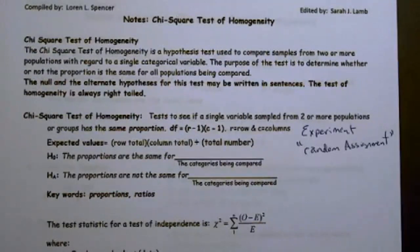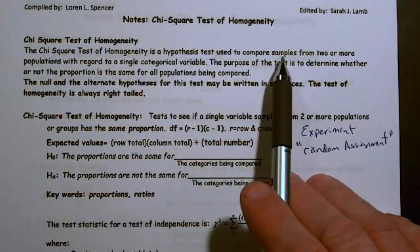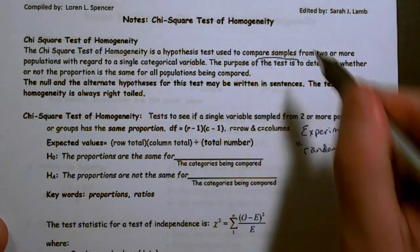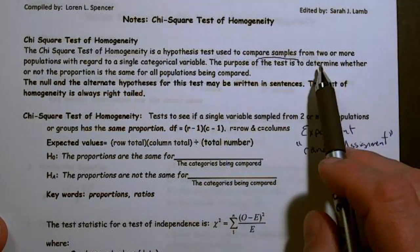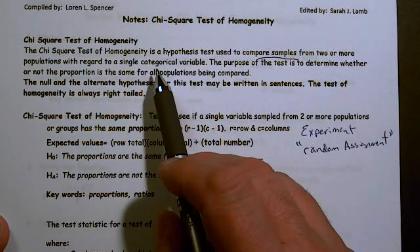The homogeneity test runs very much like the test of independence. The chi-square test of homogeneity is a hypothesis test used to compare samples. This is plural - that's important because we're going to have two or more samples from two or more populations with regard to a single categorical variable.